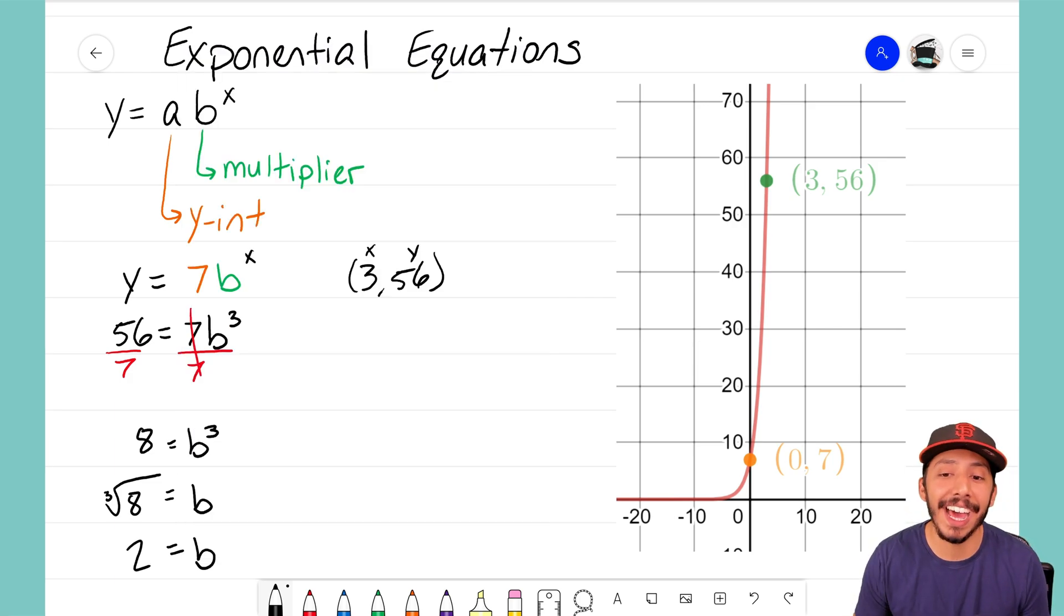The cube root of 8 is 2, and again that should make sense to us because 2 times 2 times 2 does equal 8. So the cube root of 8 is 2. I now have what my multiplier is - my multiplier is 2. I can finish off this exponential equation then. Remember zero term was 7 and now I know that my multiplier is 2.